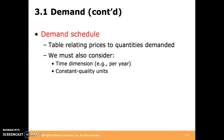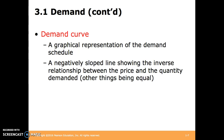Demand Schedule is the table relating prices to quantities demanded. We must consider the time dimension — comparing across the same time frame — and constant quality units, meaning we're indifferent between any individual unit of that good. The demand curve is a graphical representation of the demand schedule, with a negatively sloped line to show the inverse relationship.